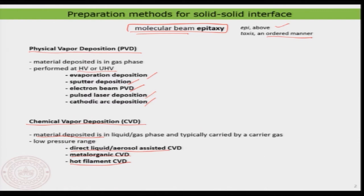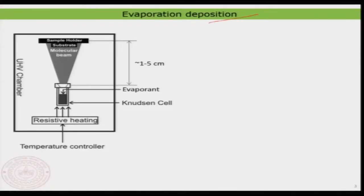Now let us look in detail at a few physical vapor deposition methods. The first and most important is the simplest one: evaporation deposition. The name itself suggests you are evaporating something, and then that gas — the molecular beam or atomic beam — is getting deposited onto the surface. It is very simple.